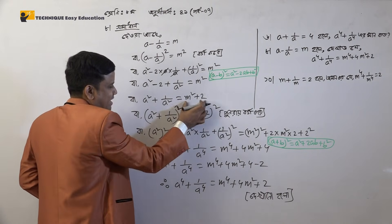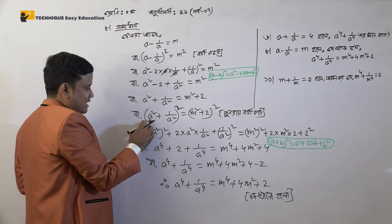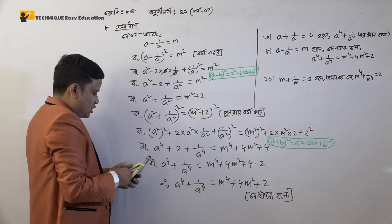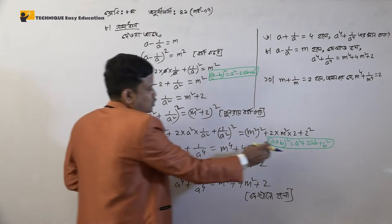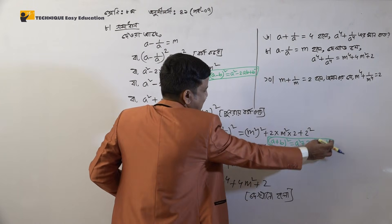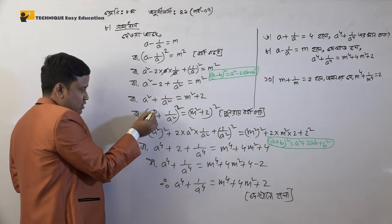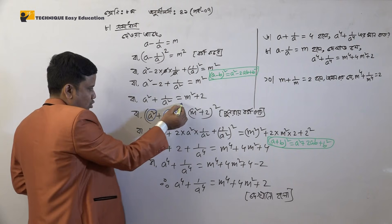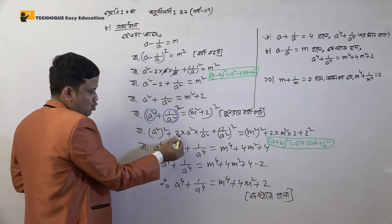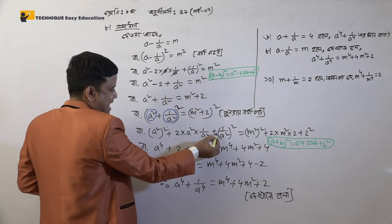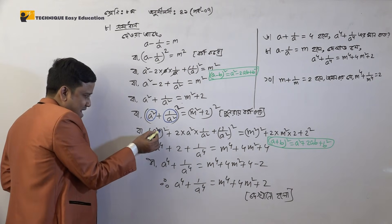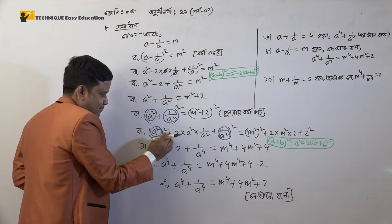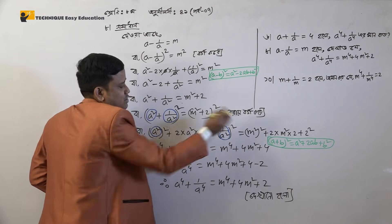A plus B whole square equals A plus B whole squared, equal to A squared plus 2AB plus B squared. Here A squared is S squared, and B squared is 1 by S squared. So A squared plus 2AB plus B squared.